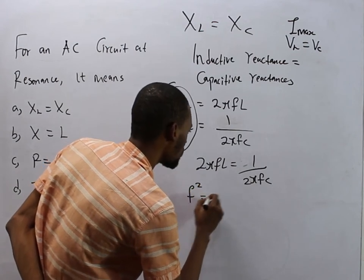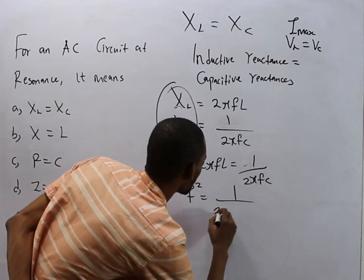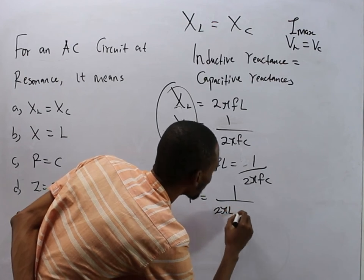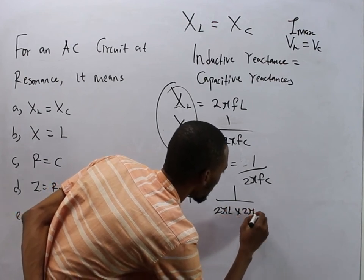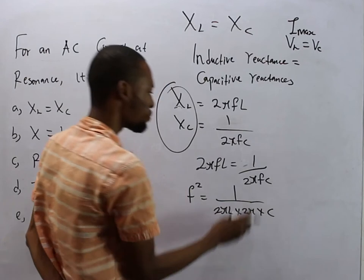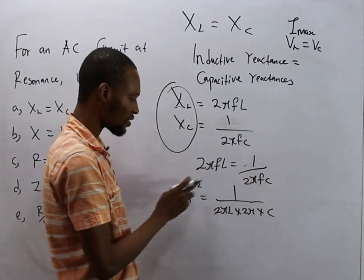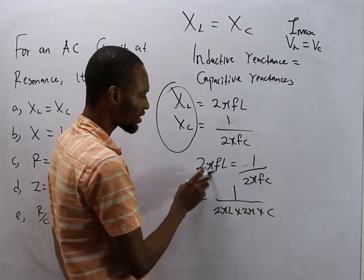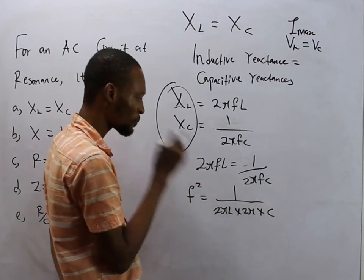f squared equals 1 over 2πL times 2π times C. So bringing this f here to multiply this other f, we get f squared. This 2π goes down, we are cross multiplying, and this L goes down.